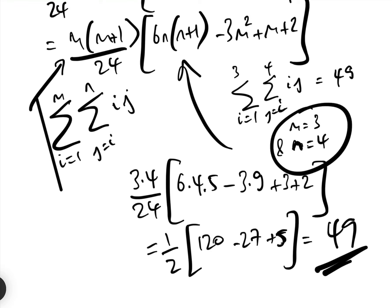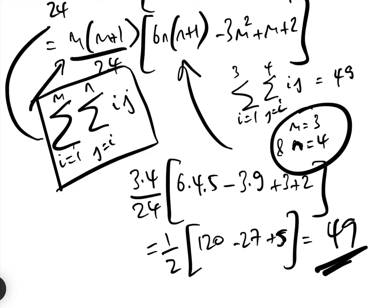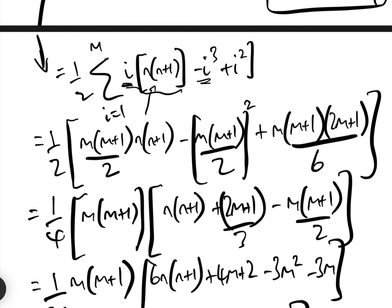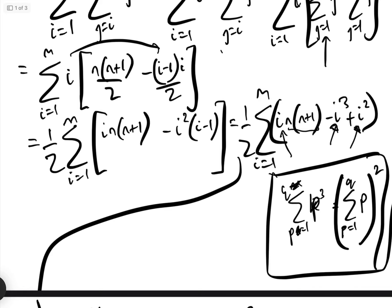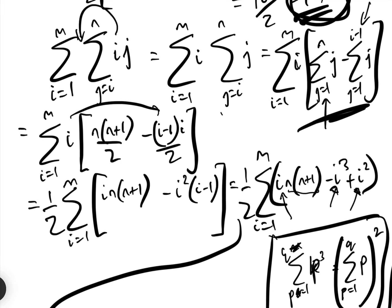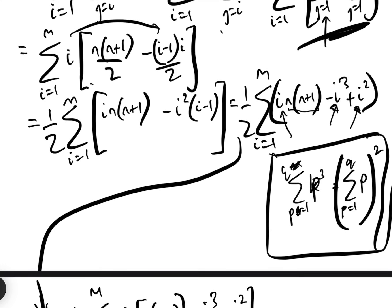So we know that the general sum from i equals 1 to m, j equals i to n, of i times j, is this rather horrific-looking formula: m(m+1) over 24, times 6n(n+1) minus 3m squared plus m plus 2. Obviously you would not be expected to remember this in an exam — it's absolutely pointless remembering this formula. But the method by which we got the formula — splitting the j summation and then summing all the i terms — is something that would be very likely to be tested in an exam.